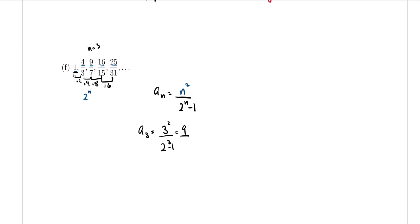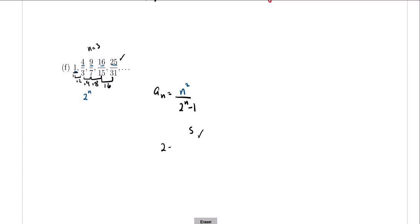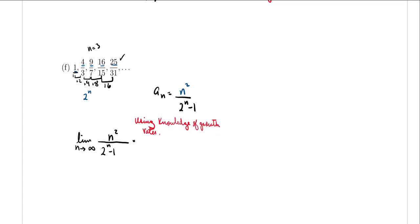If we take away 1, we do get 7. Checking with the fifth term: 5² is 25, and 2^5 minus 1 is 31. So it checks out — our general term is n² over (2^n − 1). Now we need to know if this has a limiting value. Using growth rates, the exponential 2^n is growing much faster than the polynomial n². Because the denominator is growing faster, the limit equals 0, so the sequence converges.